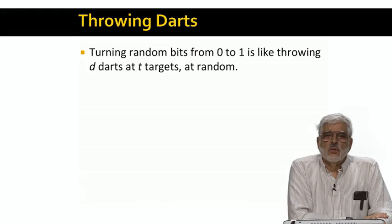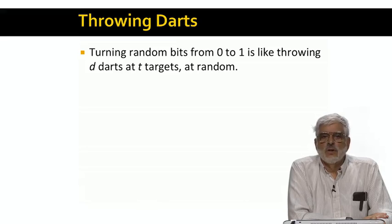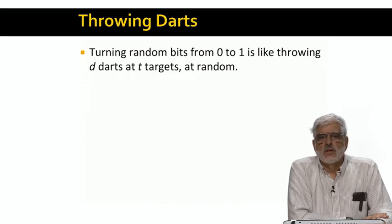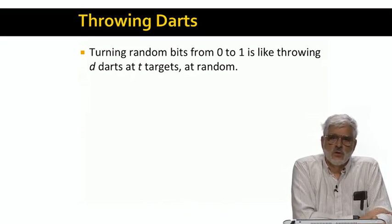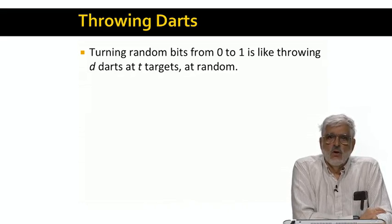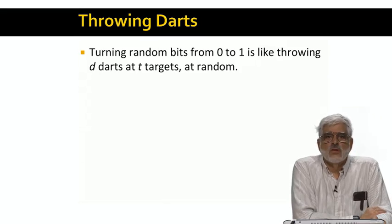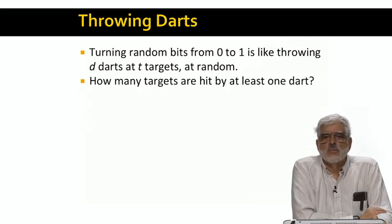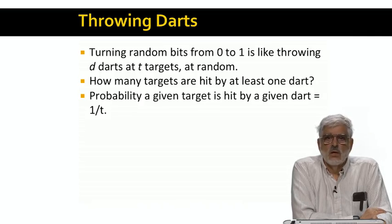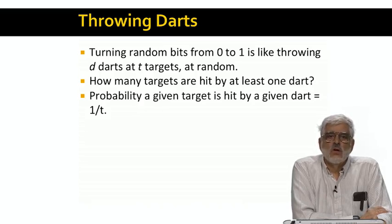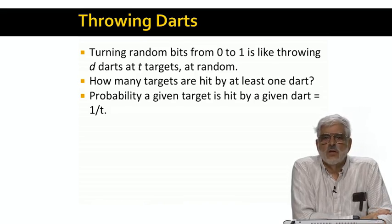I like to think of picking random bits of a bloom filter to set to 1 as throwing darts at a collection of targets, one target for each bit of the array. So suppose we have d darts. In our intended application, d would be the product of the number of inserted items times the number of hash functions. Also, let there be t targets. t would be the number of bits in the array. What we want to know is how many targets are hit by at least one dart. These are the bits that get set to 1. To calculate this number, start with the observation that if we throw one dart, the probability that a given target is hit is 1 over t.